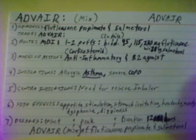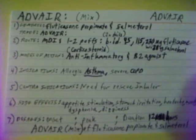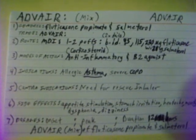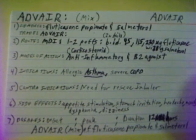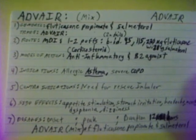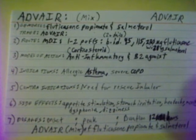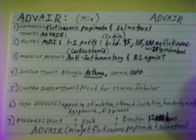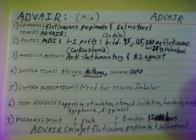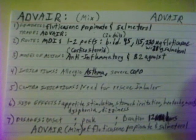Advair's mode of action is it's a corticosteroid, which is an anti-inflammatory, and a B2 agonist, which causes dilation of smooth muscles in the breathing tissue.